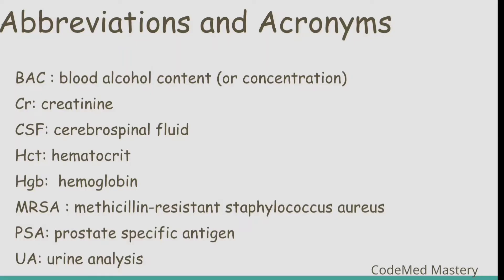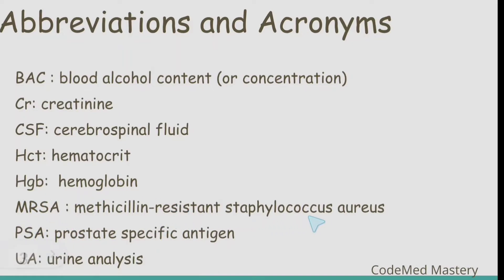Let us look at the abbreviations and common acronyms present in the Pathology and Laboratory chapter: BAC stands for blood alcohol content or concentration, CR is for creatinine, CSF is for cerebrospinal fluid, HCT is for hematocrit, HGB is hemoglobin, MRSA is methicillin-resistant Staphylococcus aureus, PSA is for prostate specific antigen, and UA is for urine analysis.